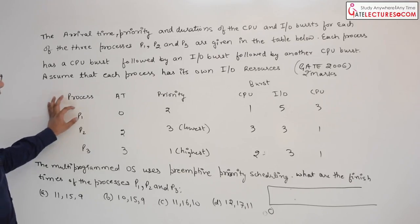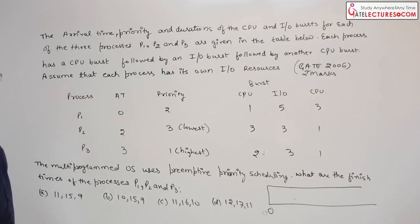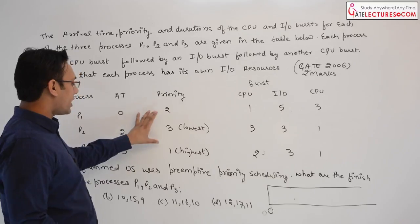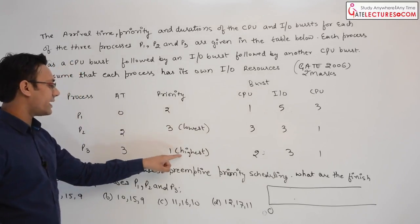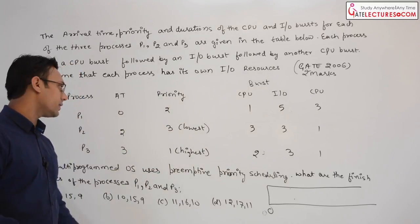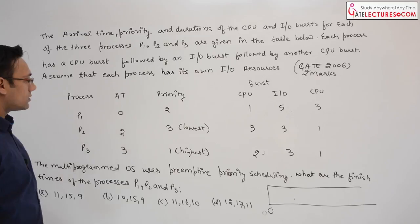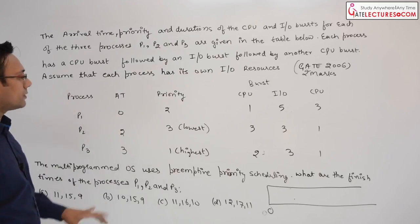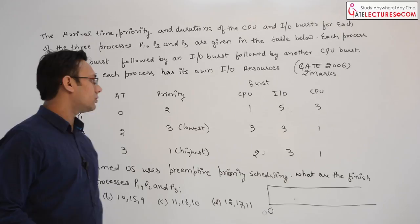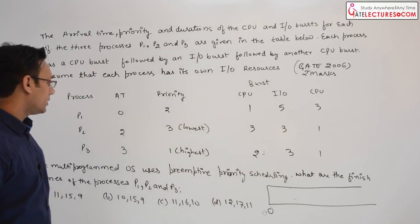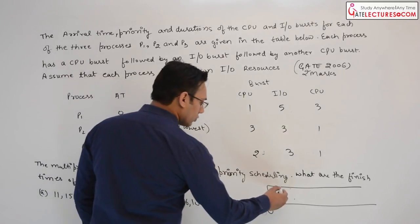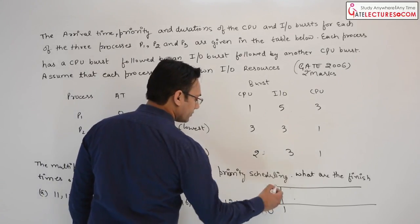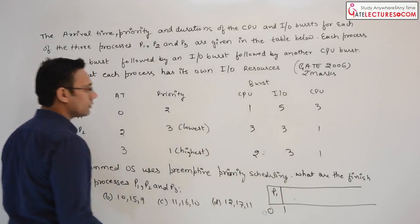At time 0, only process P1 is available. The priority of P1 is 2, which is middle priority, because 1 is the highest priority and 3 is the lowest priority. But at time 0 no other process is available, so we are going to execute process P1 till time unit 1. From 0 to 1, process P1 will be executed.